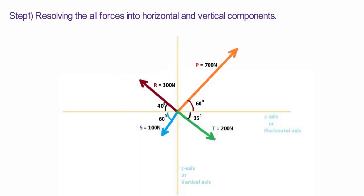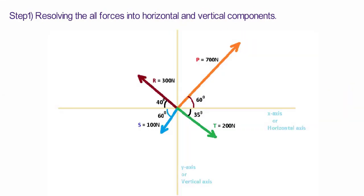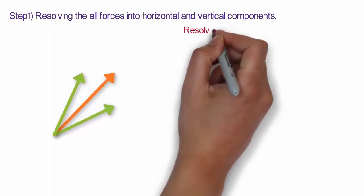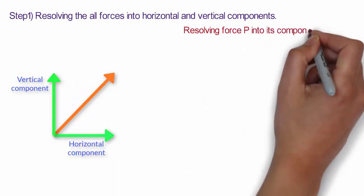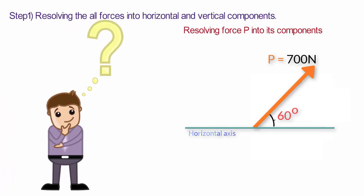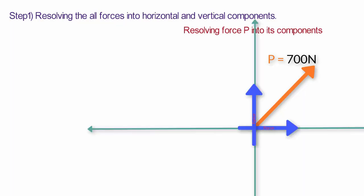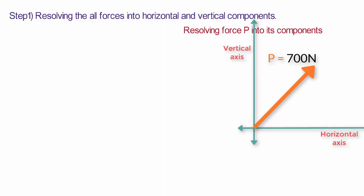Before we jump onto resolving all these forces from the figure, we will first see how to resolve a single individual force into its components along the horizontal and vertical axis. I will take force P from the same figure. Resolving the force into its components means to calculate the amount of force acting along the horizontal and vertical axis because of this inclined force P or any other inclined force.